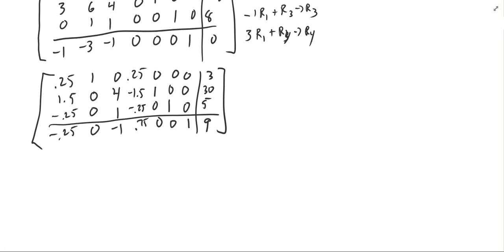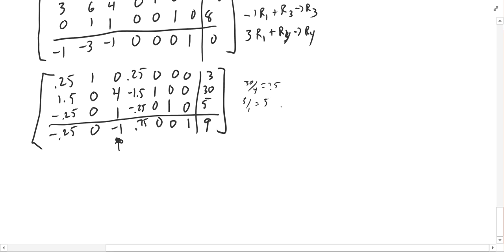Unfortunately, I'm not at the optimal solution because I still have a negative in the bottom row — that negative 1 in the z column. I divide the right-hand side values by the z column entries: row 1 has 0 so I skip it, 30 divided by 4 is 7.5, and 5 divided by 1 is 5. I take the smallest, so the pivot is the 1 in row 3's z column. It's already a 1, so that works out nicely.